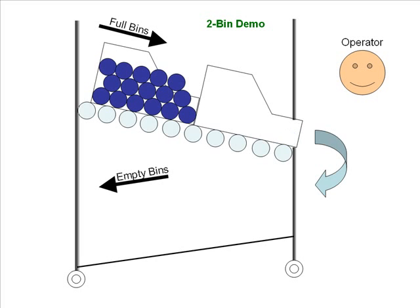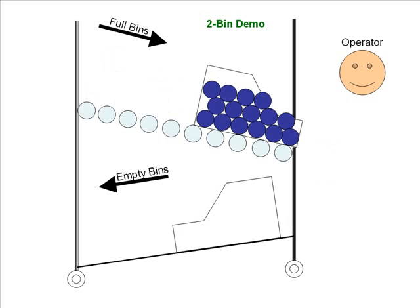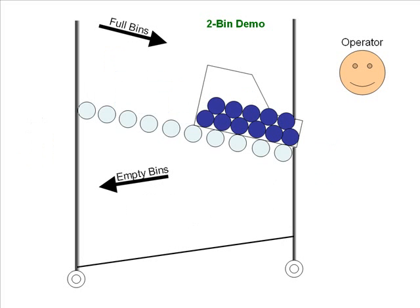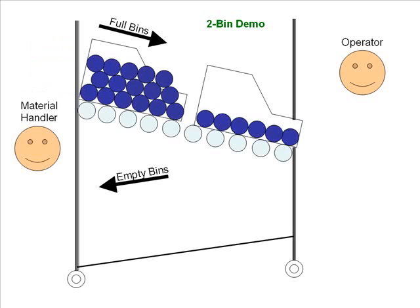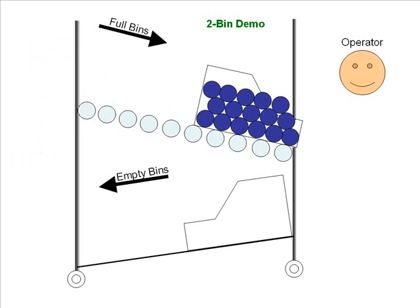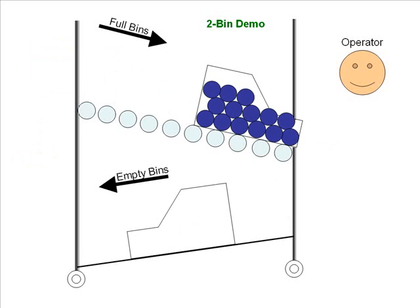The material handler is probably resupplying several flow racks and may even bring in different flow racks full of parts as needed. The operator is constantly consuming and the material handler at the right interval is taking away the empty bins and bringing back full bins. In just a minute I'll show you some examples of what bins really look like and some of the information you might want to have on your bins.